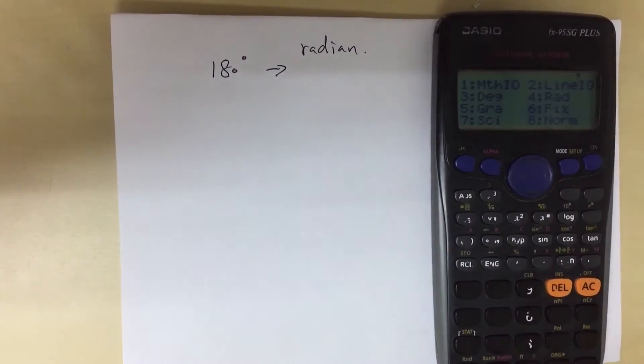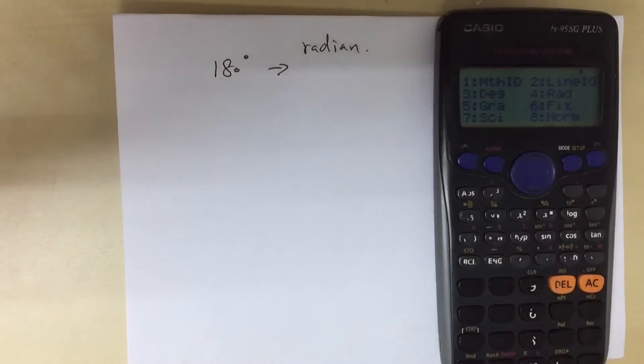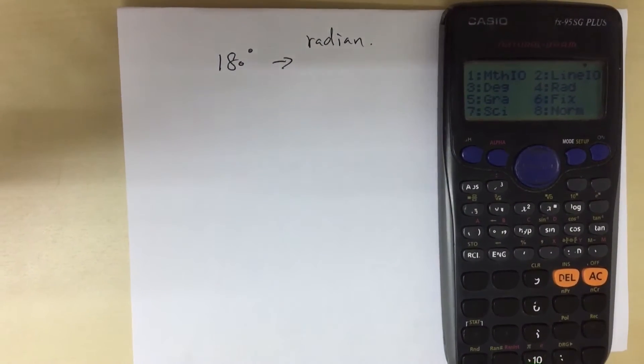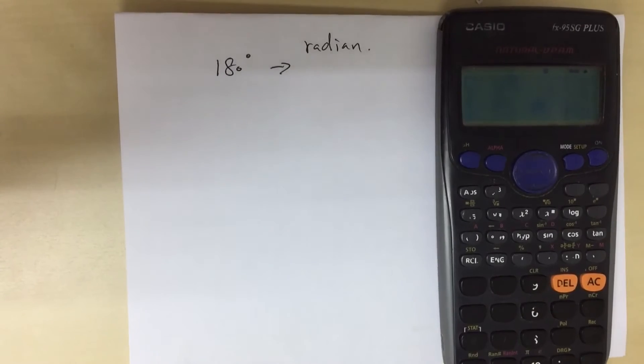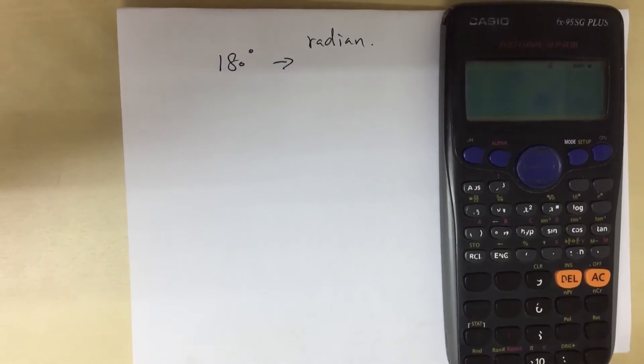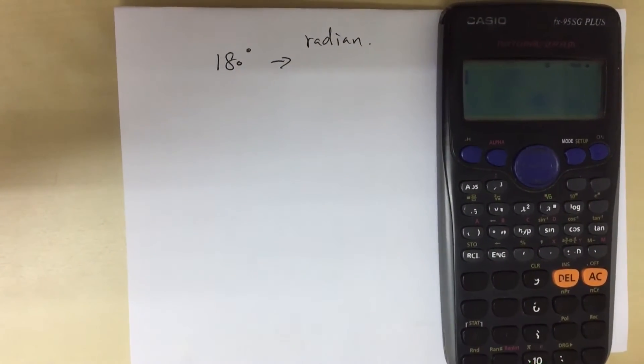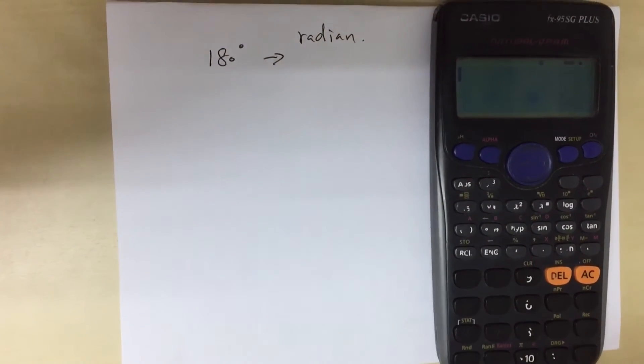You'll see a list of options. Option 4 is radian mode, so I choose 4. I have now set up my calculator to convert from degree to radian.